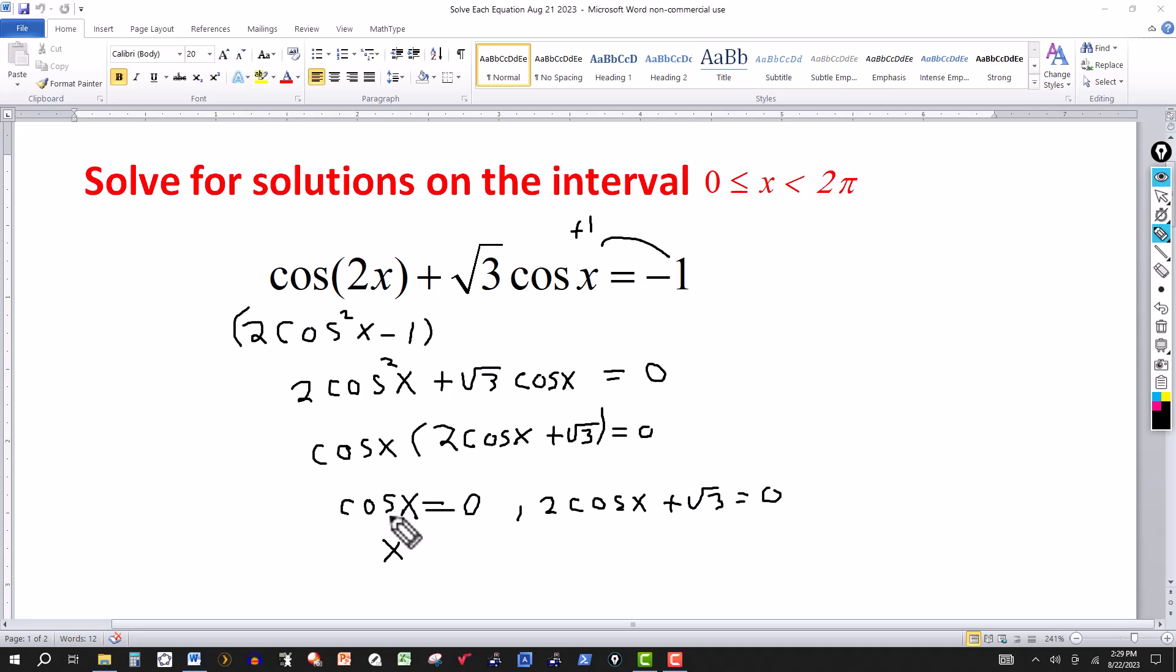So we have the cosine of x is equal to zero. So we want to find the angle or angles in the interval from zero to two pi, including zero but not the two pi. The cosine of 90 degrees is zero. The cosine of 270 is zero. So it's 90 and 270, but we want radians here.